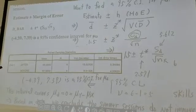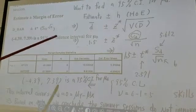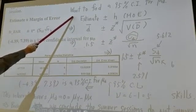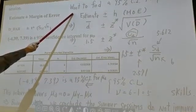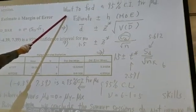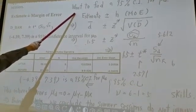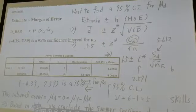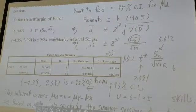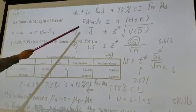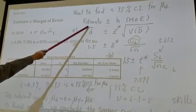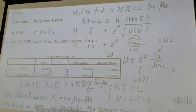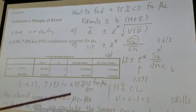Next, we want to find a 95% confidence interval for μd. μd is μy minus μx. To find a 95% confidence interval for μd, the formula is estimate plus or minus h. h is the margin of error — MOE means margin of error.